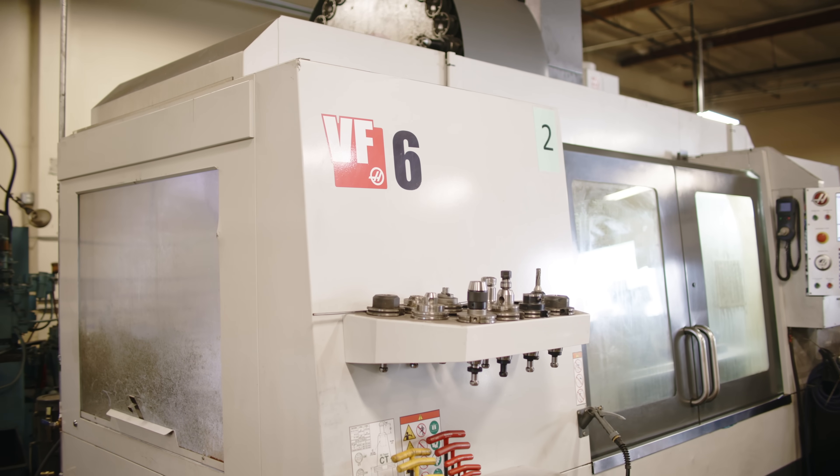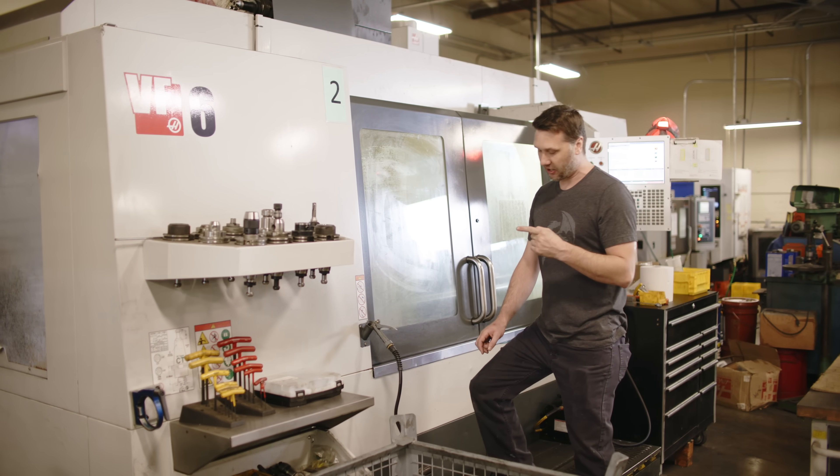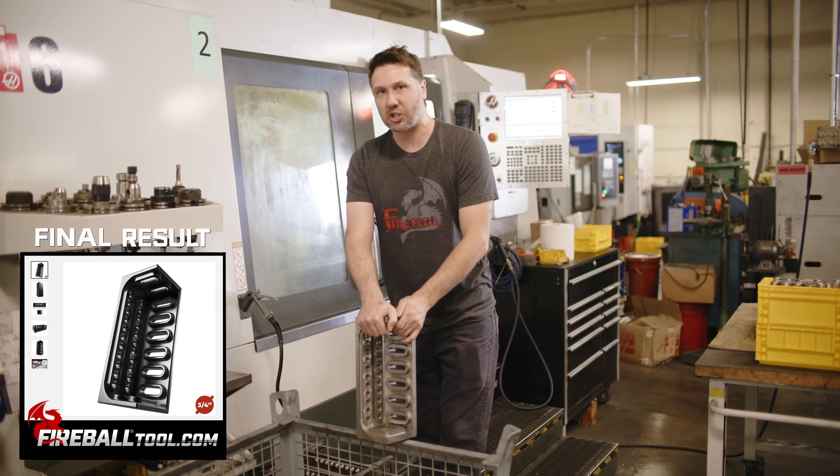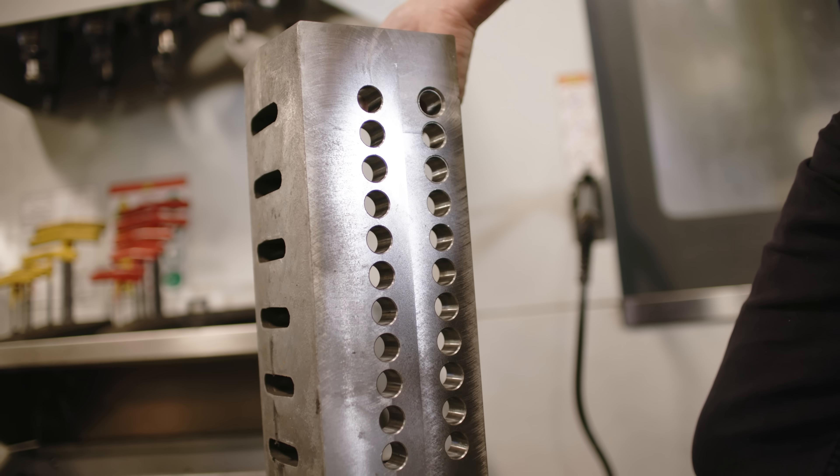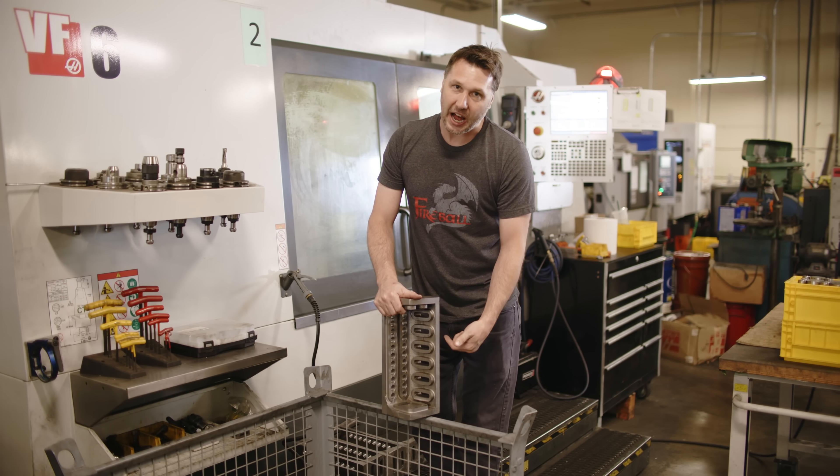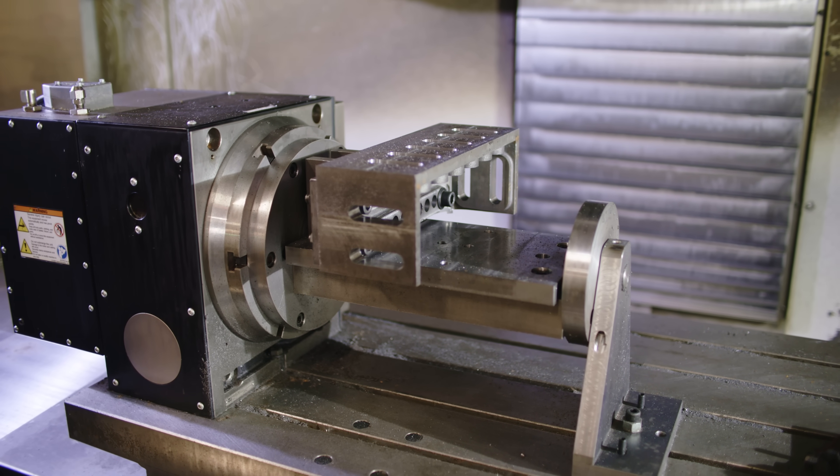Behind the VF4 is the VF6 and this is the 50 taper machine and it's running the heavy iron and it's making these bad boys. These are the new fixtures for the Fireball table. This is the 14 inch standoff block. A lot of holes to drill, a lot of slots to make and that's what this bad boy is running at the moment.